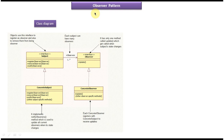First we will see the class diagram of the observer design pattern. In the observer design pattern there are two important components: the first component is observer and the second component is subject. You can see interface observer and it has an update method. This interface observer will be implemented by concrete observer, and concrete observers will provide implementation of the update method.